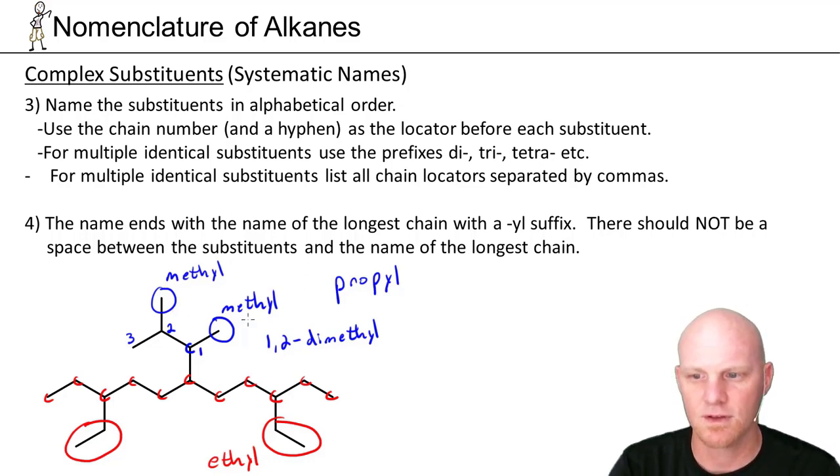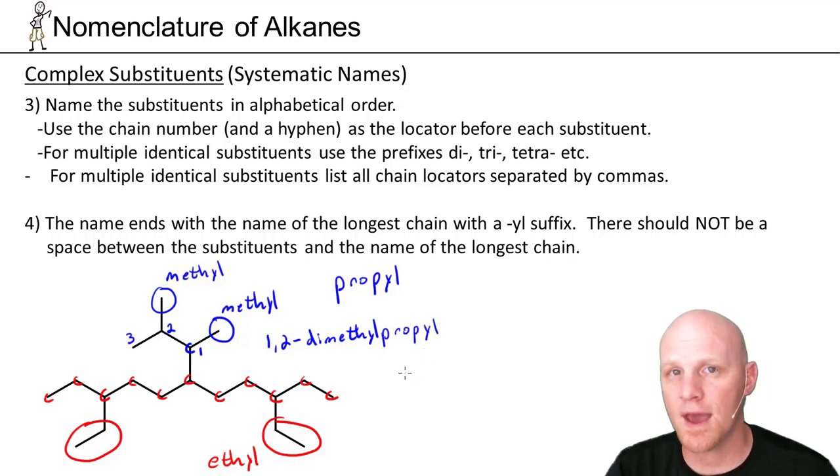We know this thing is a propyl group. It has a couple of methyls. And we use the normal chain locators. So 1 and 2 for where those methyls are located. We say 1, 2 dimethyl. And then we simply just follow it off with propyl. Now notice we don't say 1, 2 dimethyl propane. We say 1, 2 dimethyl propyl because the whole thing is still just one big substituent. So now let's see how we put that together and name the entire compound that we've got before us.